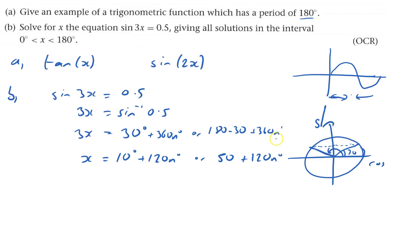Or 150 divided by 3 is 50 plus 120n, because I have to also divide the 360 by 3. Now we can work out what it is, between 0 and 180, exclusive. So x equals,